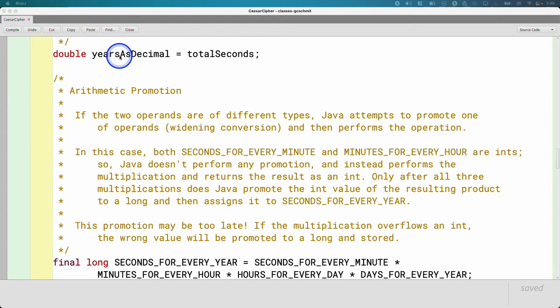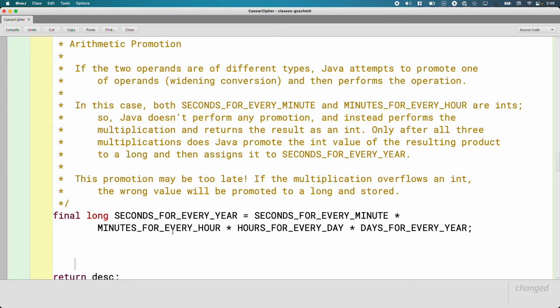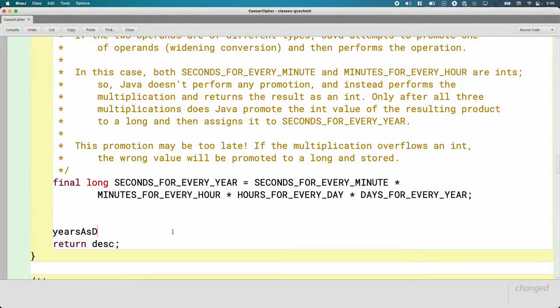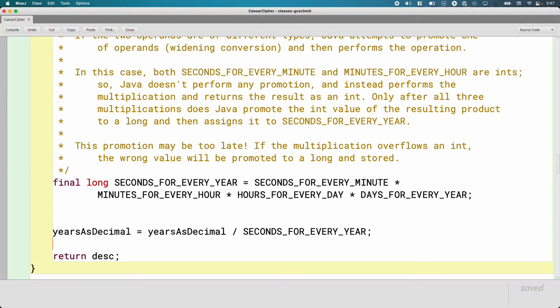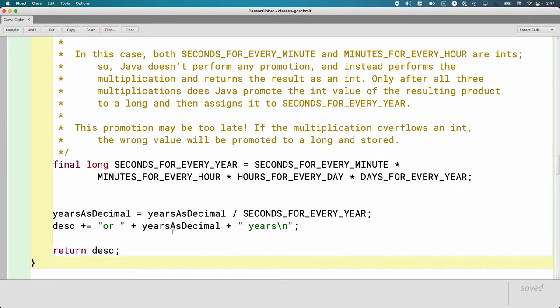One thing to be aware of is that this promotion may be too late. If the multiplication overflows an int, what I mean by that is when we multiply these four values together, if we end up with such a large number that it overflows what an int can hold, if that happens, the wrong value will be promoted to a long and stored. Promotion doesn't fix the overflow. It doesn't work that way. It's too late. We've already overflowed. We already have the wrong value. We're now just going to make that wrong value a long instead of an int. It's still the wrong value. So just be aware of that. If we were concerned with overflow here, we'd have to ensure that one of these values gets promoted earlier, which is really important. In this case, we're fine. This product is not that large. So we've got our local variable yearsAsDecimal type double. We have this final variable SECONDS_FOR_EVERY_YEAR. Now we can use yearsAsDecimal, which have been initialized to totalSeconds and this variable SECONDS_EVERY_YEAR and actually do our little calculation. So let's do that. We're going to say yearsAsDecimal equals yearsAsDecimal, which right now has the value of the total seconds, so we'll divide it by SECONDS_FOR_EVERY_YEAR. That will give us an answer, which could be like 37.6 years.